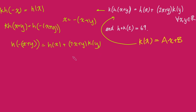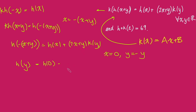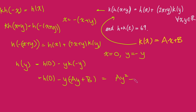Now we get rid of the x's by replacing x with 0 and y with minus y. Substituting in, we get h of y equals h of 0, minus y times k of minus y. Since k of x is ax plus b, k of minus y equals a times minus y plus b, so minus y times k of minus y gives ay squared minus by plus c, where c equals h of 0. So h of y is a quadratic function — ay squared minus by plus c.